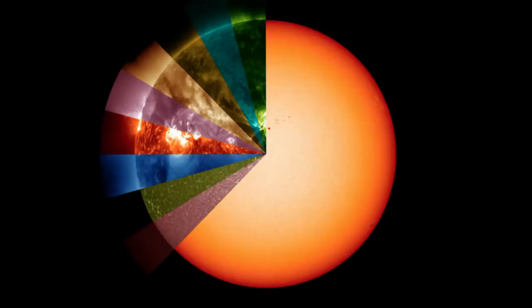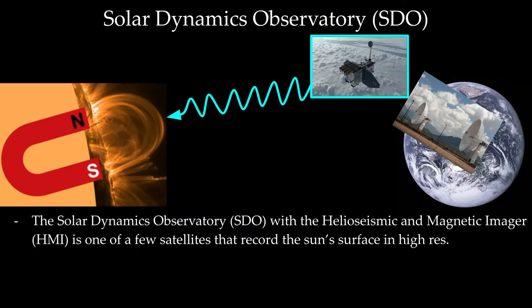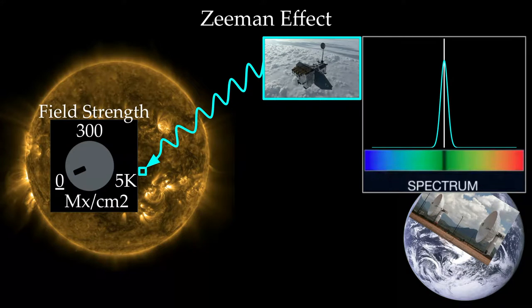Now, when we look at the sun normally, we don't necessarily see too much in the visible spectrum. However, it turns out there's a lot that's going on across many different wavelengths of light, and by looking outside of the visible spectrum, we can get a better understanding of what the magnetic field is. So we have a satellite called the Solar Dynamics Observatory SDO with an imager called the Helioseismic and Magnetic imager that can record the sun's surface in a high resolution. And the reason it can use various different wavelengths of light to understand the magnetic field is something called the Zeeman effect.